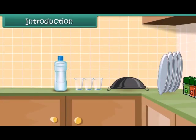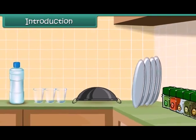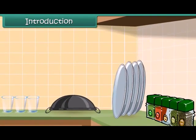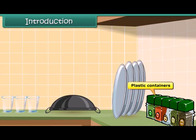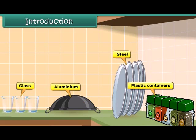Your kitchen shelves must be neatly arranged with rows of food containers, mostly made up of plastics. Plastics have taken so much prominence in our lives, now that we have replaced materials like aluminium, iron, steel and glass with plastics.